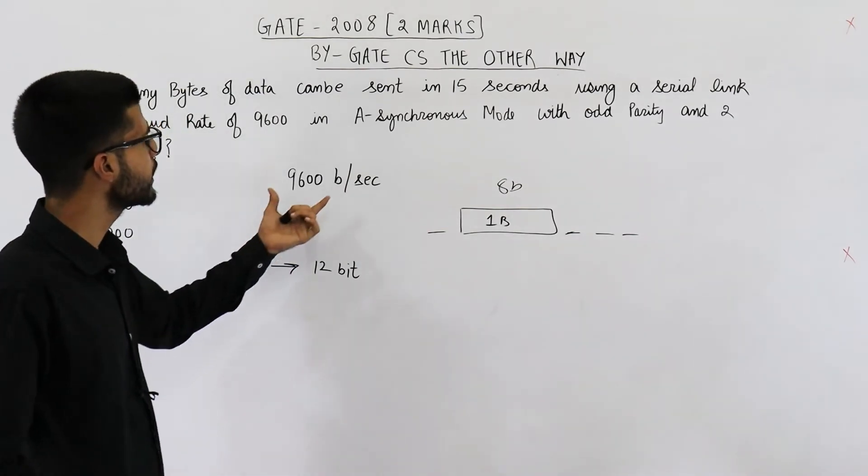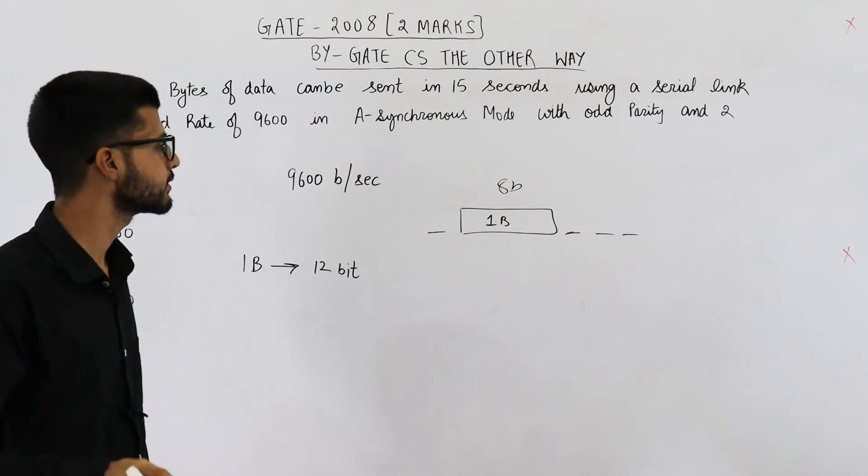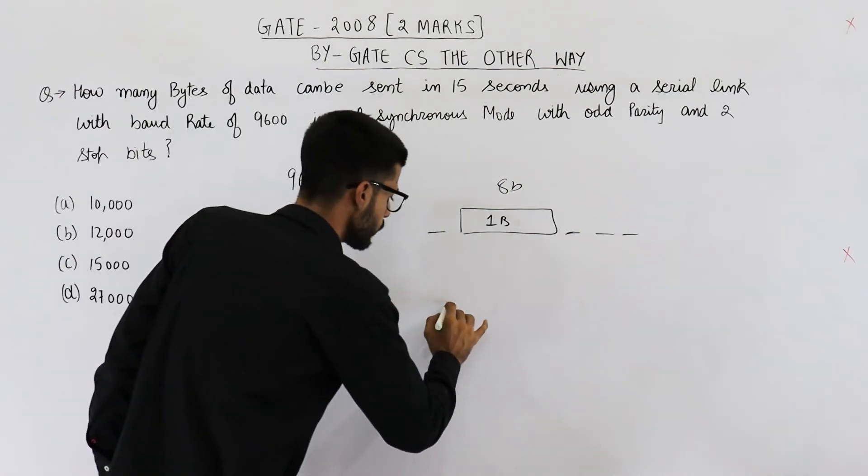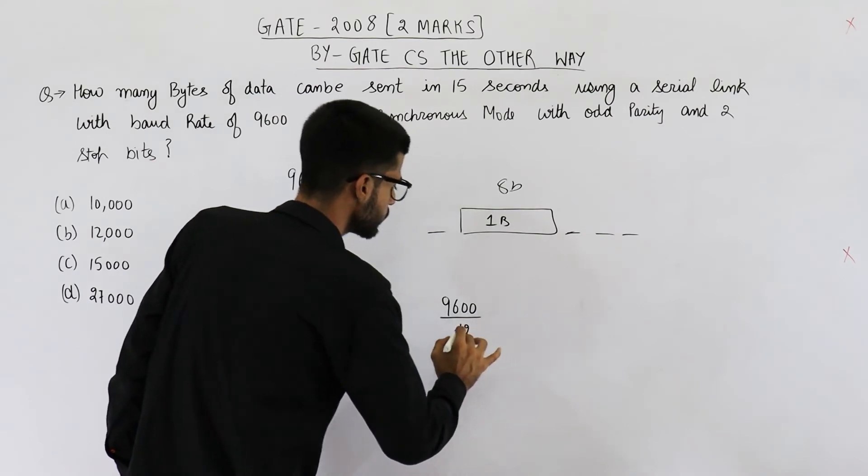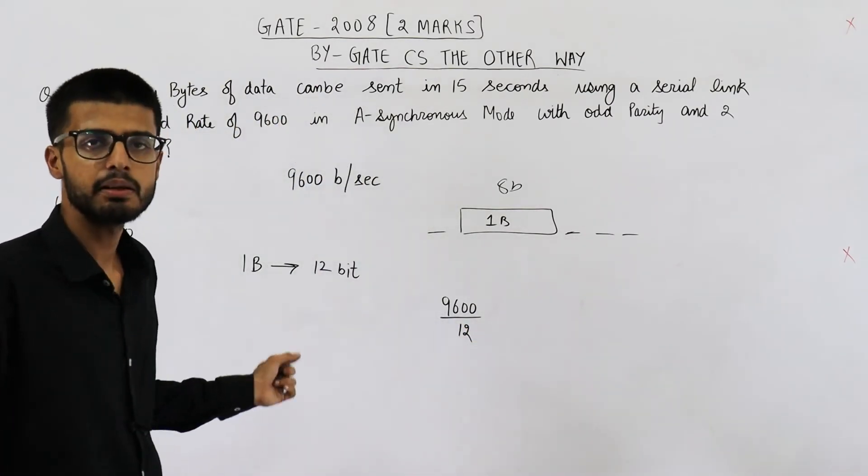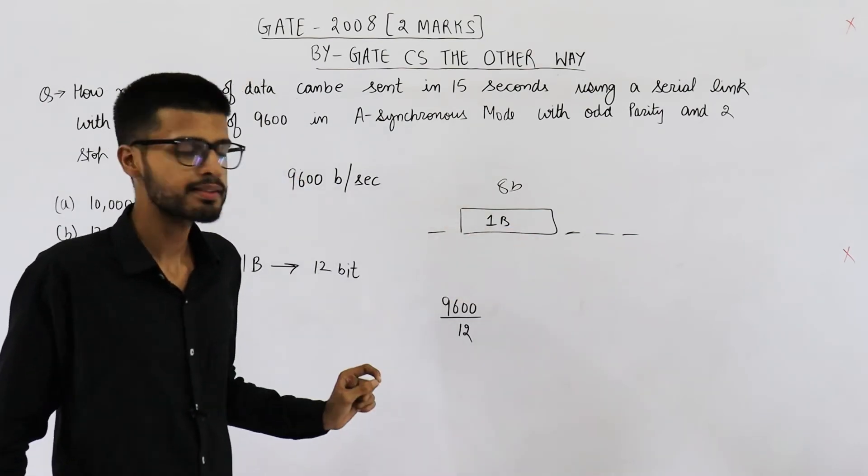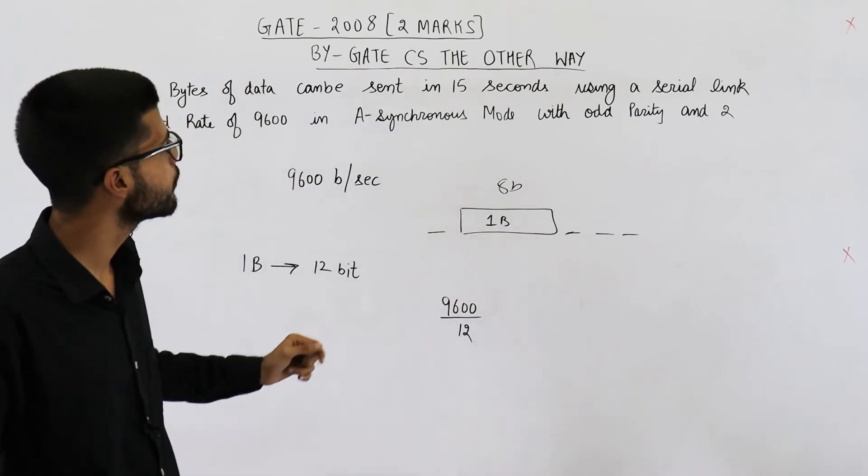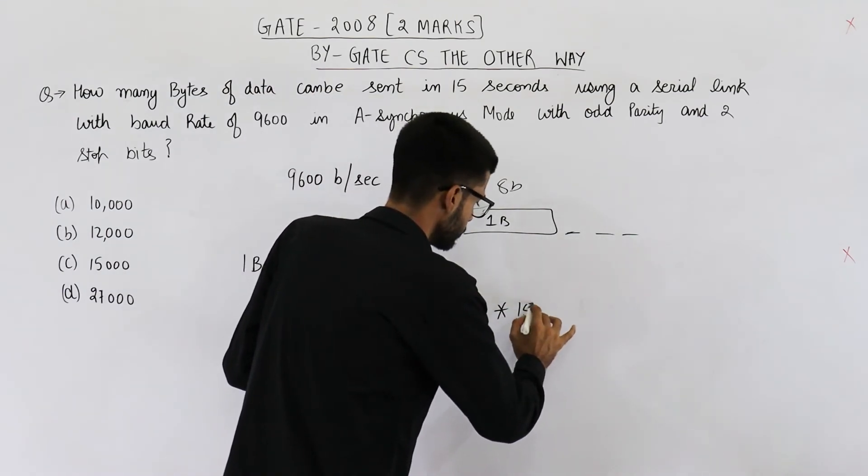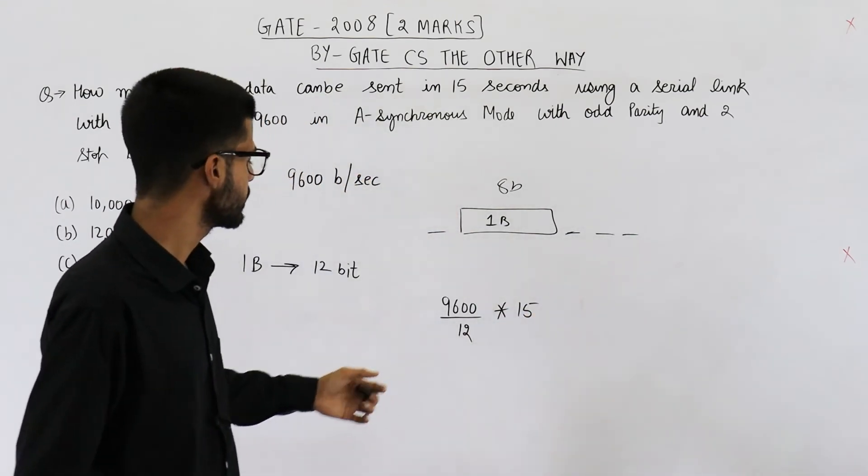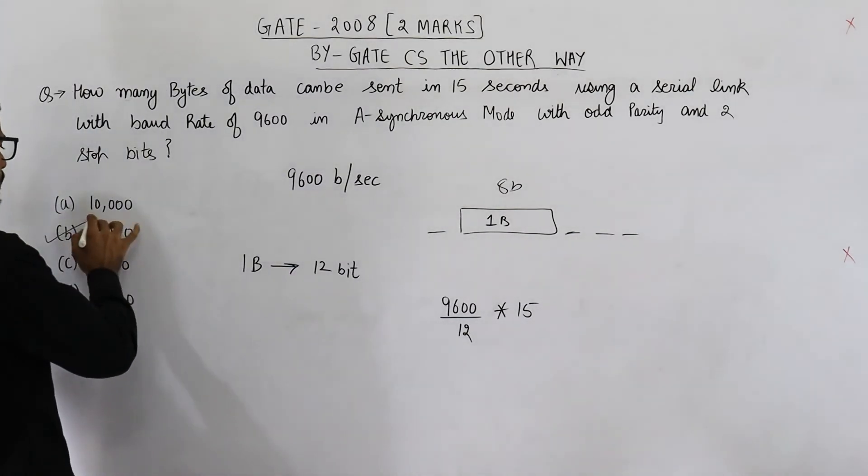And in every second we can send 9600 bits. So how many useful bytes are sent in every second? That will be 9600 divided by 12. These many useful bytes, that is actual data, is sent in one second. They are asking about 15 seconds, so just multiply it by 15.